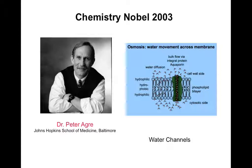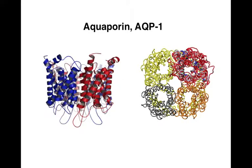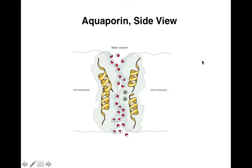This is what aquaporin looks like. This is one subunit, you're looking at it from the side. This is the second subunit, but if you look at it from the top, this is the pore through which water passes. These are the four different subunits - aquaporin has a total of four subunits.